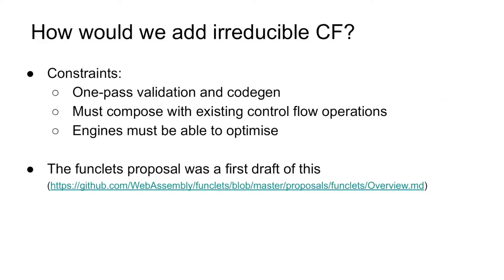Briefly leaving aside the question of motivation, we can just consider how would we even do it? We'd need to add a new control flow construct to the language or extend an existing one so that irreducible control flow can be encoded. WebAssembly is explicitly designed around a one-pass validation and compilation scheme so that streaming compilation can work. We need to make sure that however we generalize the language's control flow, this is still possible. Ideally, we'd also want whatever we add to compose well with the existing block and loop control flow constructs. And finally, we want engines to continue to be able to optimize WebAssembly code, so that choosing to generate irreducible WebAssembly doesn't actually result in a performance drop.